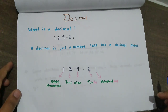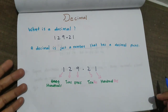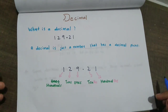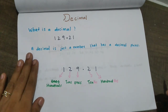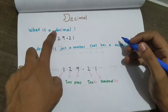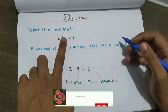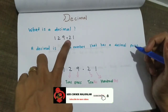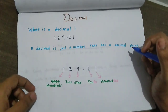If you have a lot of confusion here, we will learn how to solve it. What is a decimal? Decimal is just a number that has a decimal point. If we have a decimal point, we will learn about decimals.